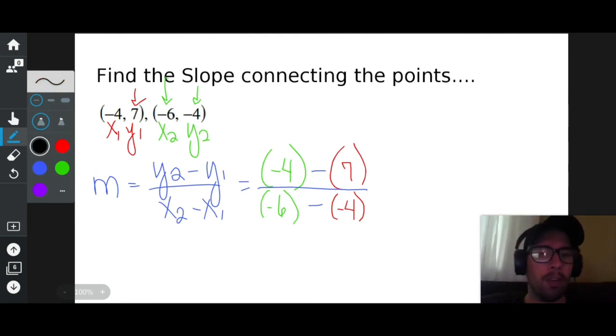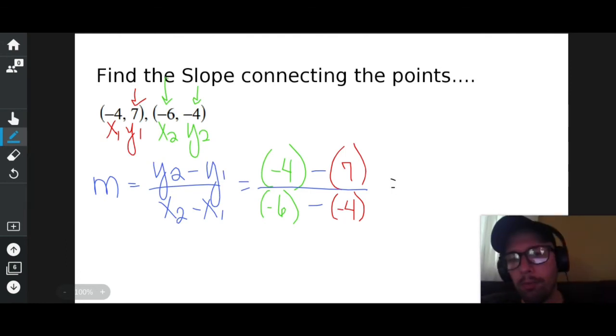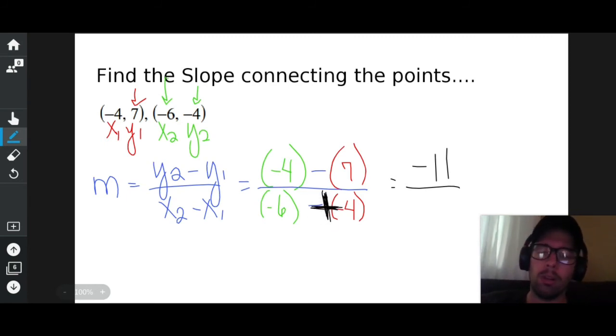Now I simplify. Negative 4 minus 7 is negative 11. Negative 6 minus negative, ooh a double negative. Whenever you see a double negative, make the double negative a plus positive. So negative 6 plus 4 is negative 2. I can take it one step further. A negative over a negative is a positive. So negative 11 over negative 2 is positive 11 over positive 2. And that's my answer.